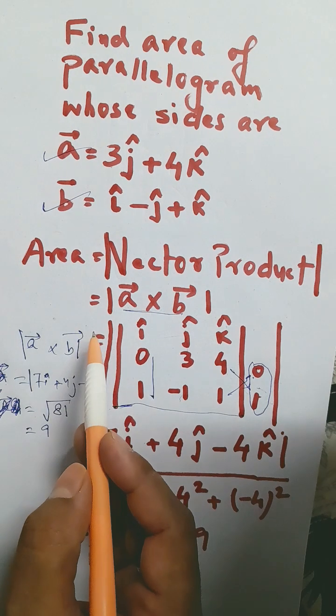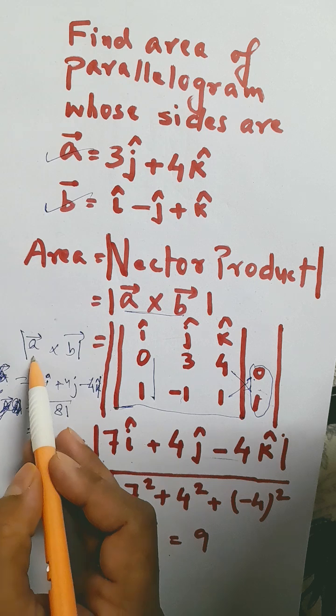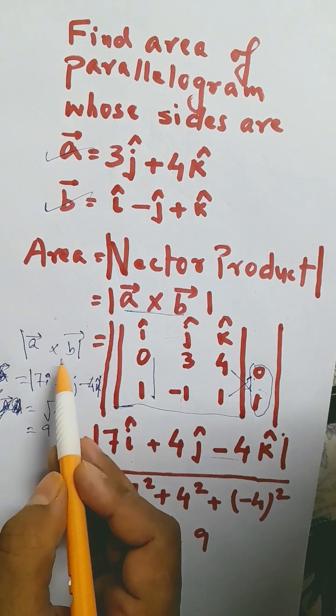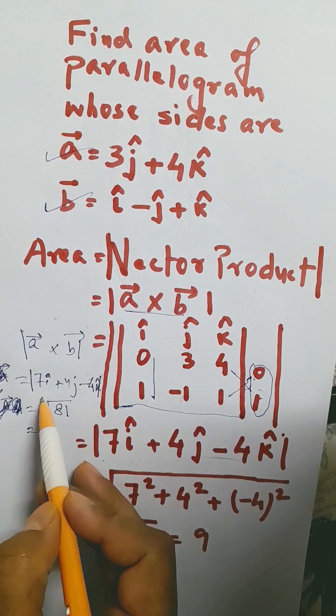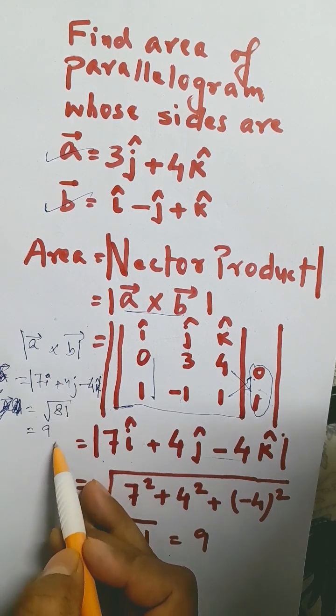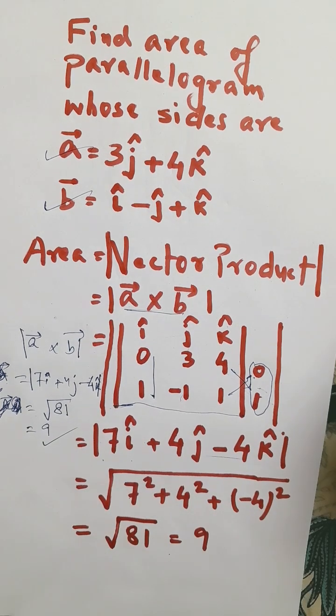Find out a cross b. A cross b comes out as this. The modulus of a cross b is root over of this, and ultimately you get nine. So just remember: area of parallelogram is vector product of the sides.